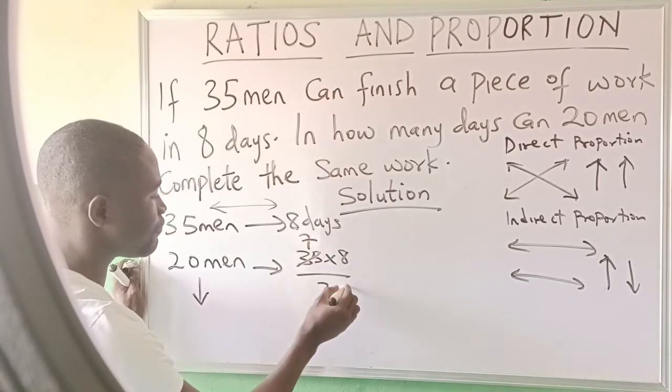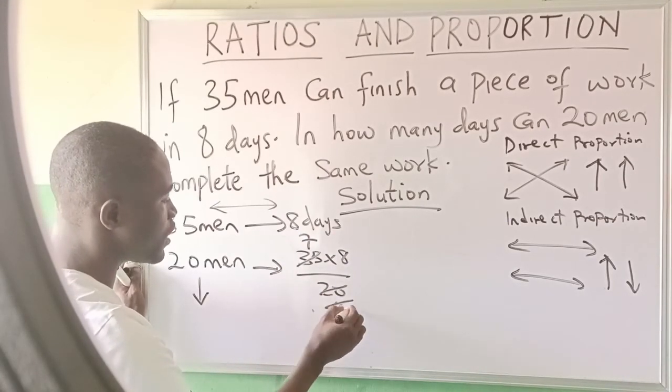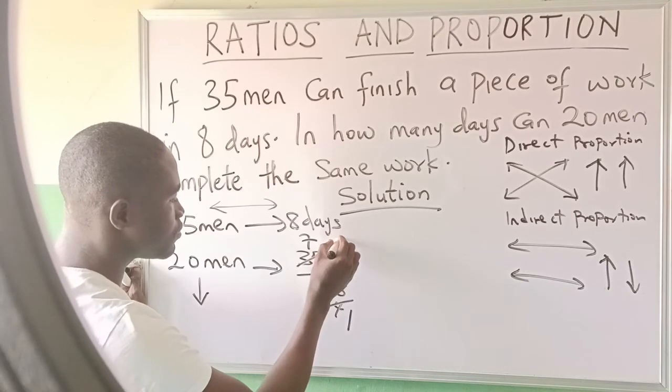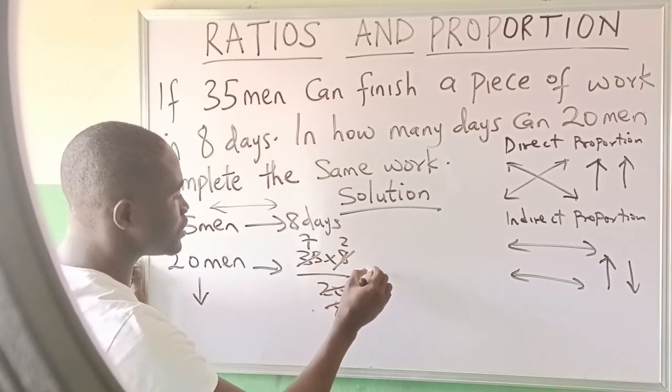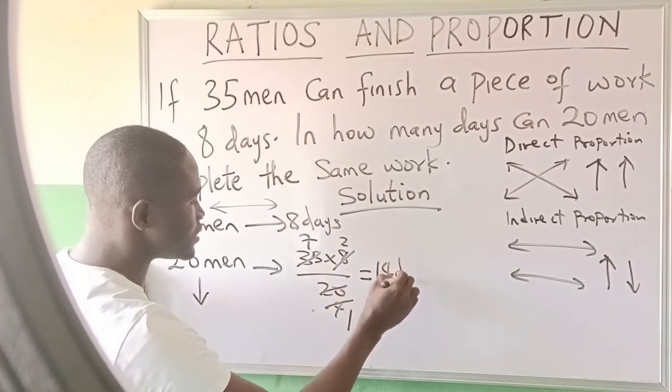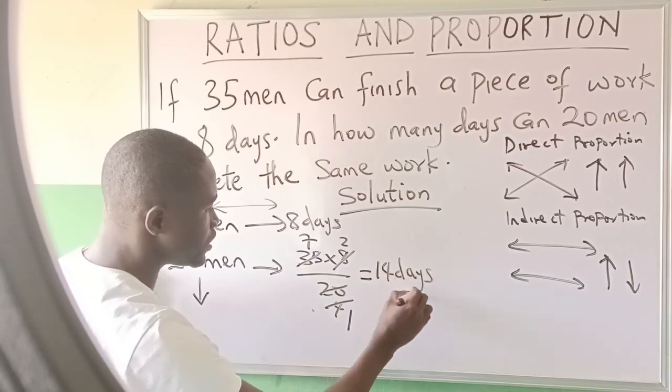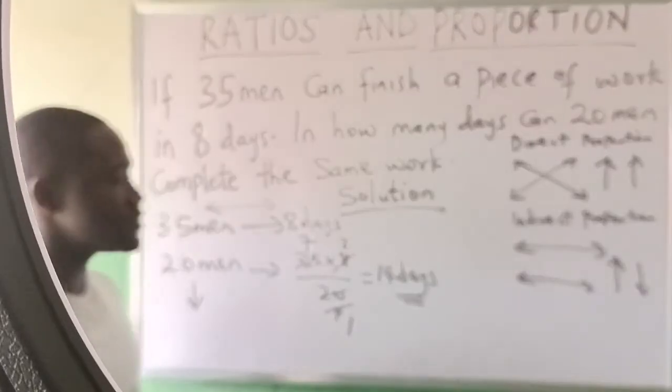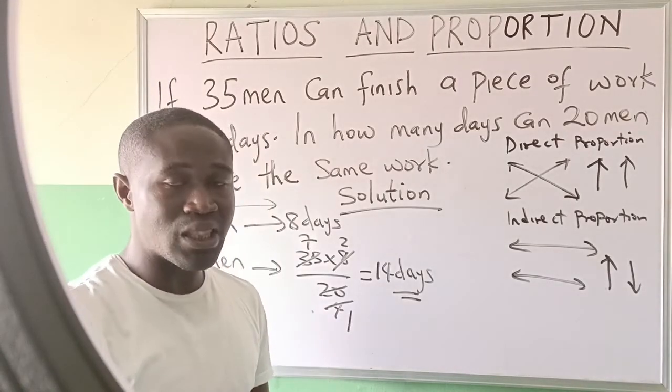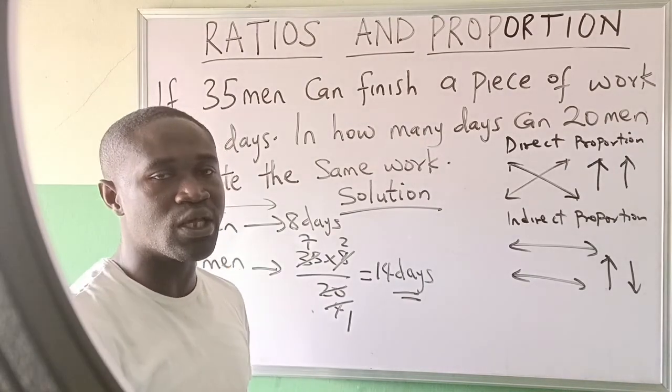35 divided by 5 is 7, times 4 equals 14. That means they will need 14 days to finish it. So that is it. Thank you so much for watching today's video.